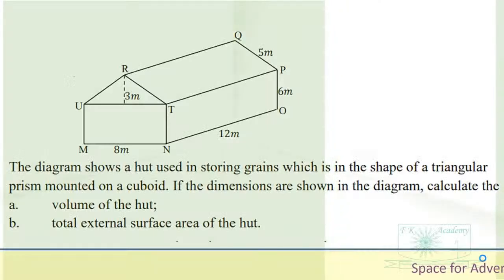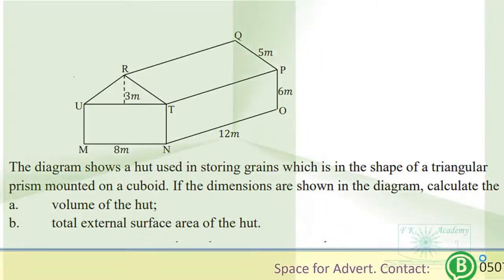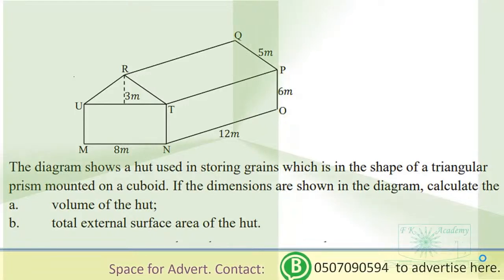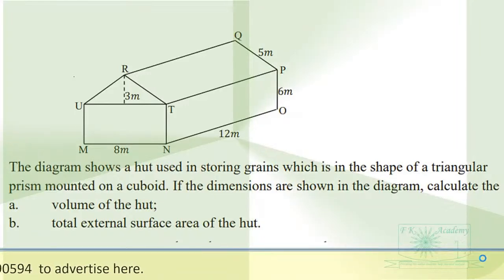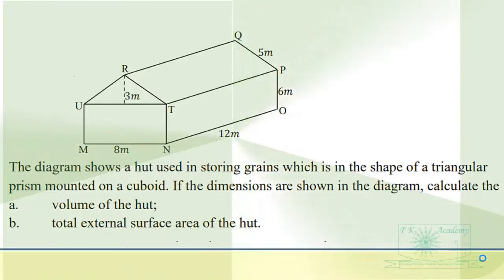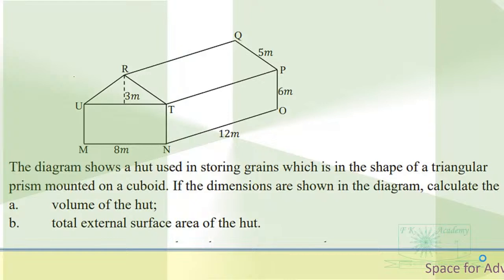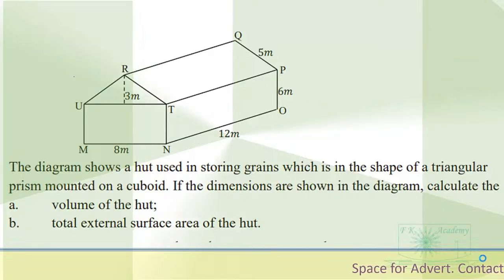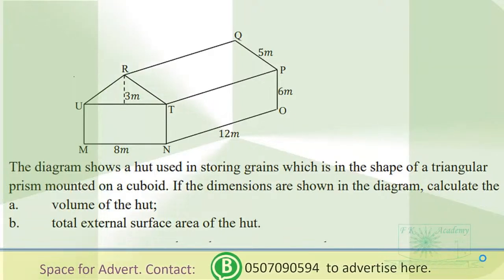You are live on FK Academy channel. We are preparing for OC 2025, so we are solving these questions. If you are also going to write in our deck, you can also revise with these questions. The diagram shows a heart used in stirring grains, which is in the shape of a triangular prism mounted on a cuboid with dimensions shown in the diagram. Calculate the volume of the heart and the total surface area of the heart.